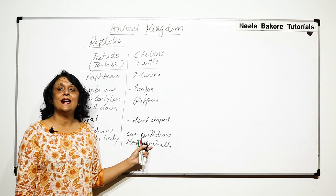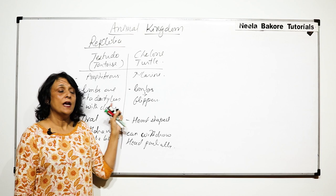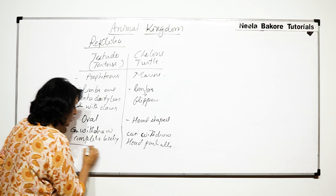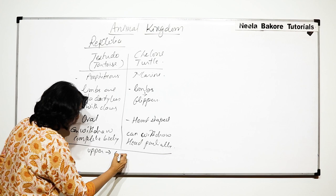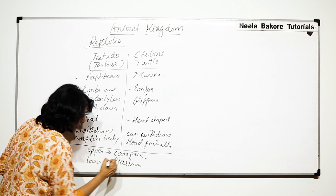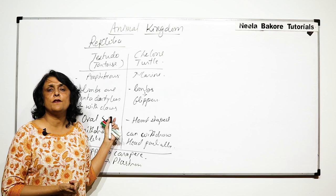Because they live in different areas, their habitats differ and they show certain adaptations: one has flippers and the other has pentadactyl limbs with claws. The common thing is that they both have a shell with an upper and lower part. The upper part is known as the carapace and the lower part is known as the plastron.